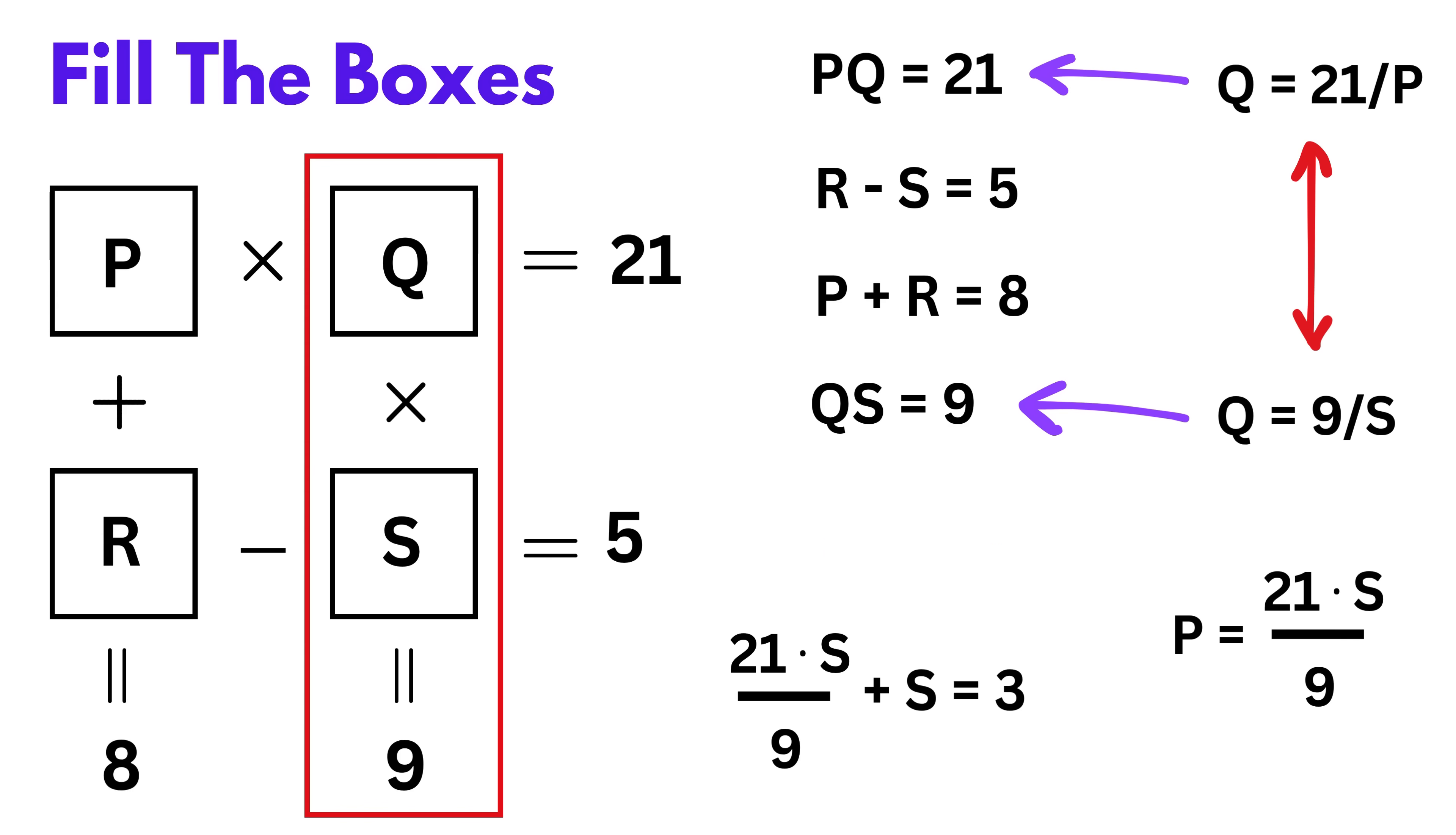That gives us 21 times S divided by 9 plus S equals 3. To simplify this, make both terms have a denominator of 9. So the first term remains 21 times S over 9 and the second becomes 9 times S over 9. Adding them gives 30 times S over 9 equals 3. Now multiplying both sides by 9, we get 30 times S equals 27. So S equals 27 divided by 30, which is 0.9.